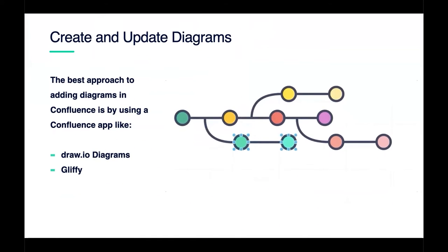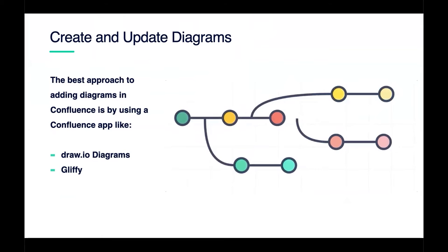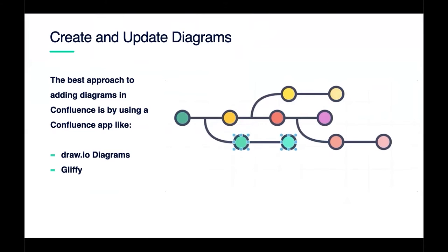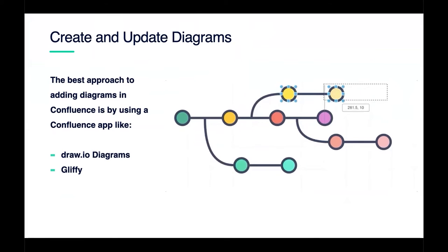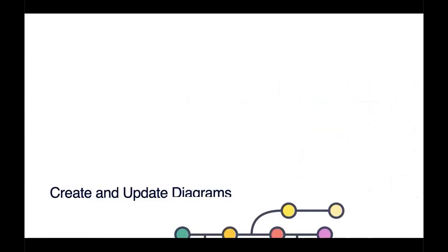Diagrams are another powerful feature. Using apps like draw.io or Gliffy, teams can create diagrams right in Confluence. The content is managed with the same versions and rendered dynamically, so it looks good on mobile or a large screen. Teams don't have to draw a diagram in Visio, export it as a PNG, and upload it to Confluence — and hopefully remember to repeat that whole process when someone makes a small change. All of it is in Confluence, rendered dynamically, saving time and keeping content in one spot.